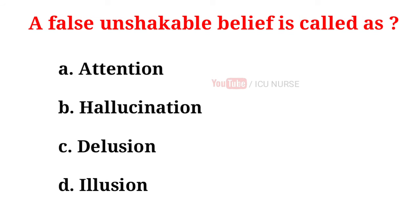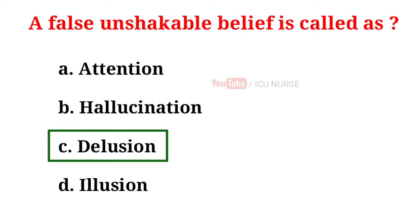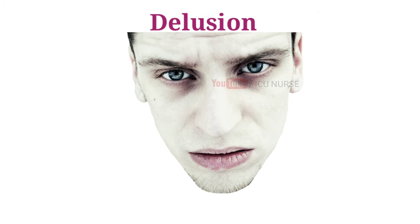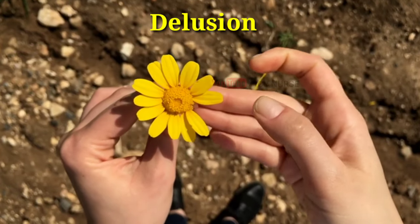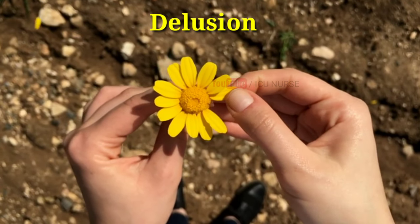A false unshakable belief is called: A. Attention, B. Hallucination, C. Delusion, D. Illusion. And the correct answer is C. Delusion. A delusional person believes things that couldn't possibly be true. For example, if you are convinced that a flower is trying to kill you, you are sadly delusional.